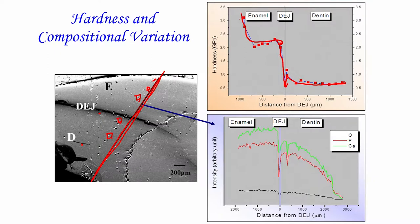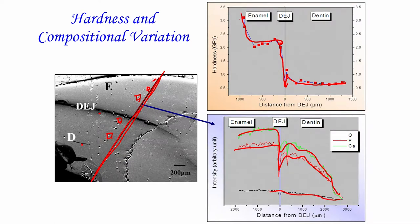EDS — energy dispersive spectroscopy — analysis done together with the scanning electron microscope shows that calcium content is reduced as you go from enamel to dentine. The trend for phosphorus and oxygen content does not change significantly. This confirms that the hydroxyapatite content is reduced, consistent with what was seen earlier: 95% in enamel and 70% in dentine.